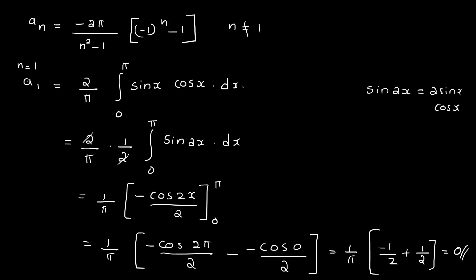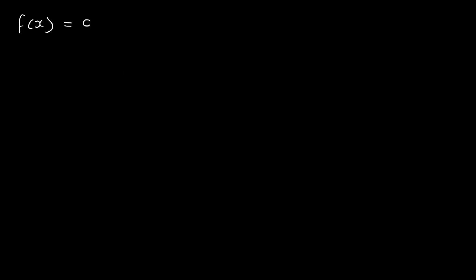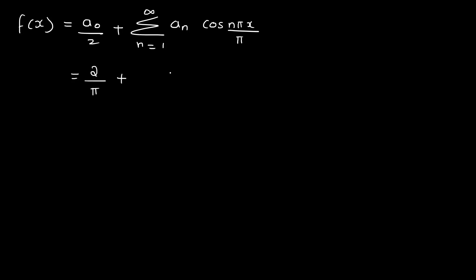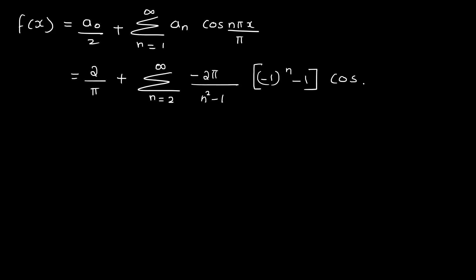Therefore the complete Fourier series is: f(x) = a₀/2 + summation n=1 to infinity of aₙ cos(nx), where a₀ = 4/π and aₙ = -2((-1)^n + 1)/[π(n²-1)] for n ≠ 1, and a₁ = 0.